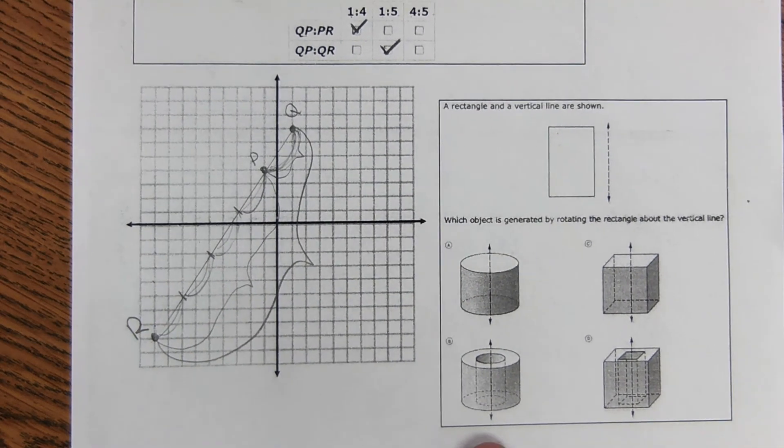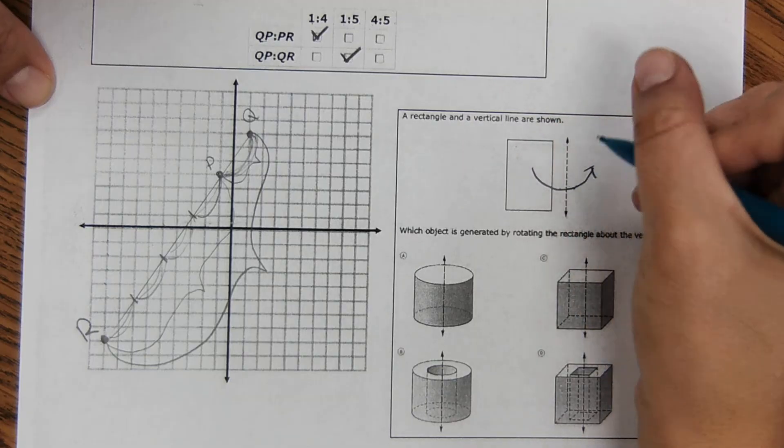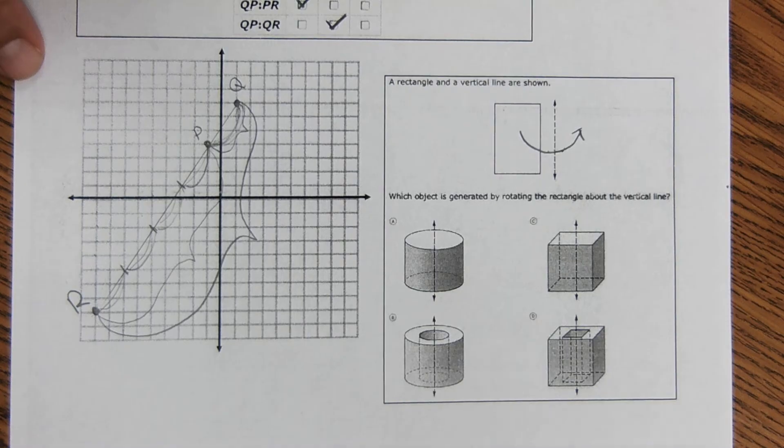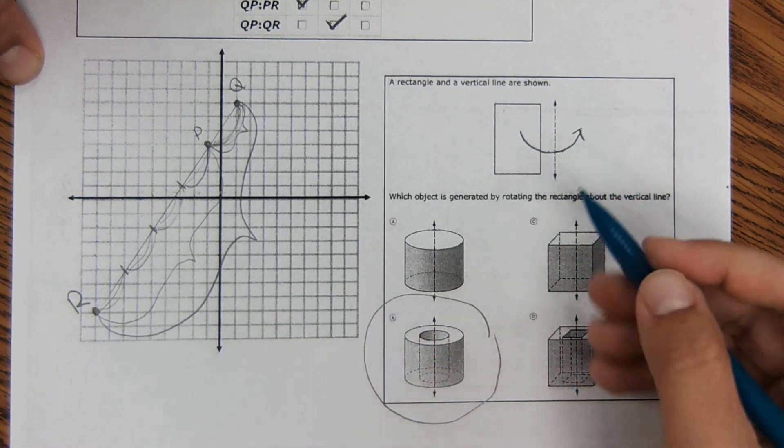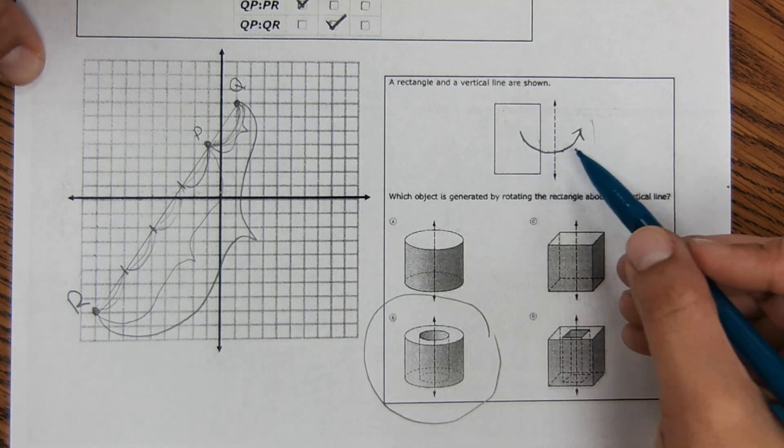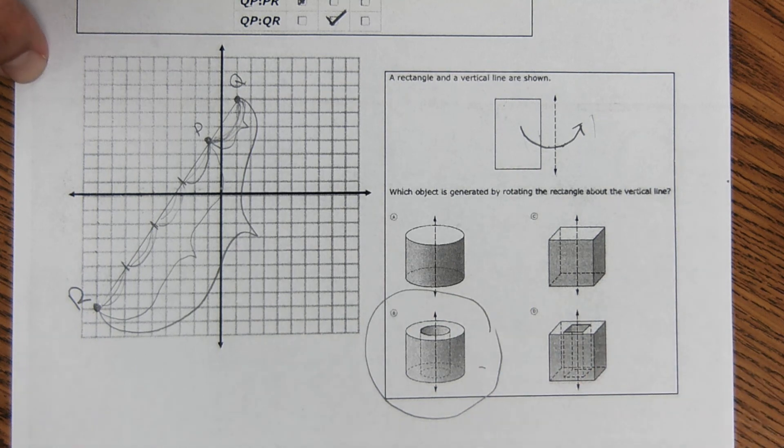And then last but not least, we've seen this one before. We're rotating this rectangle around this line 360 degrees and determining what 3D shape that would make. The answer is B. It would keep that space. It's just rotating all the way around same distance from the line and it would make this shape. And that's it all.